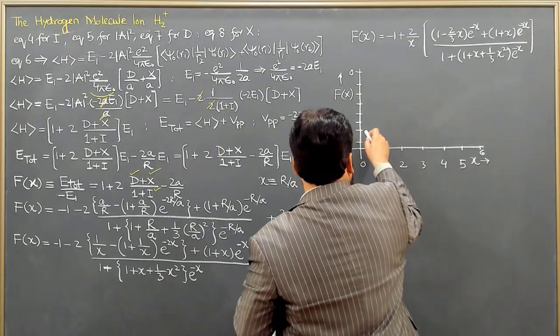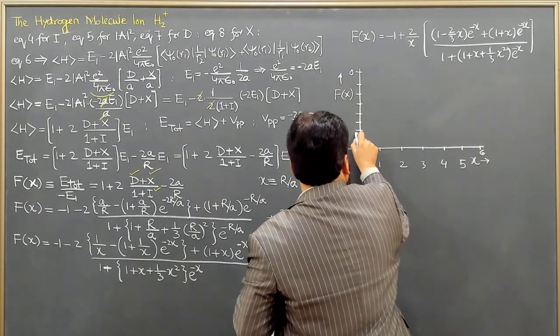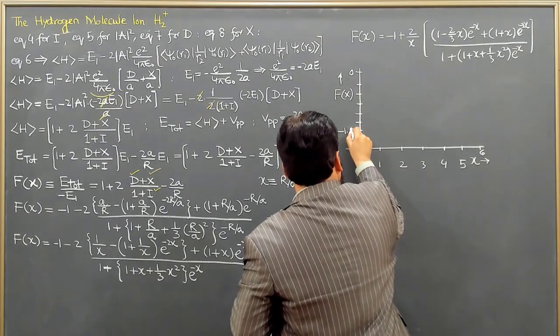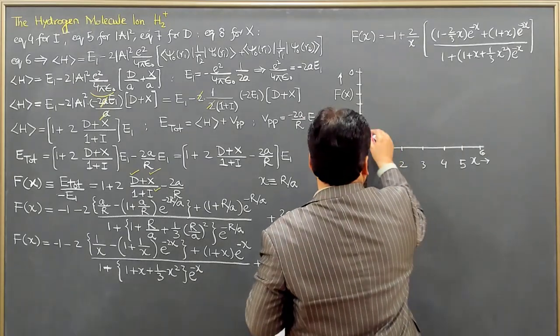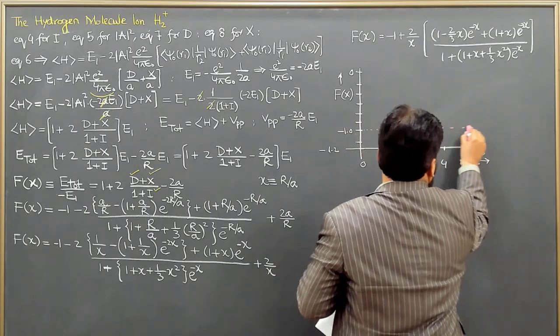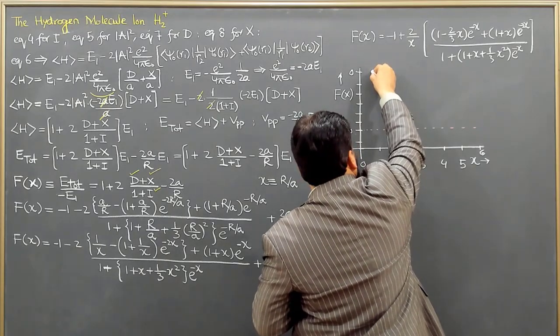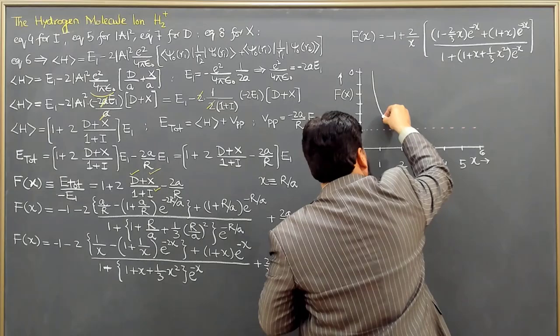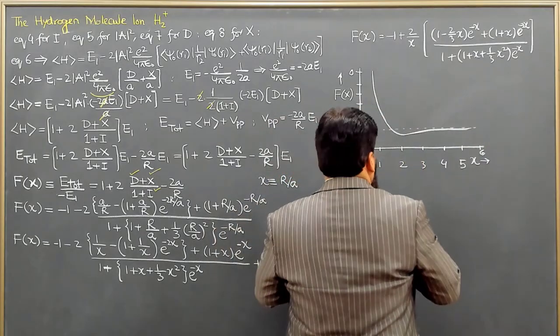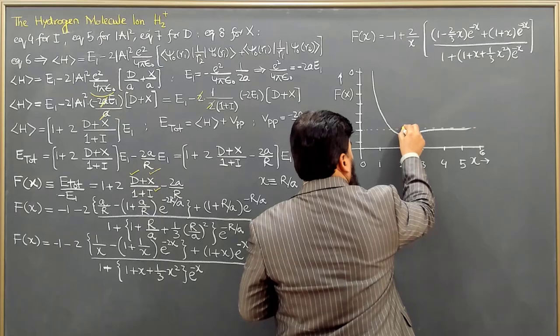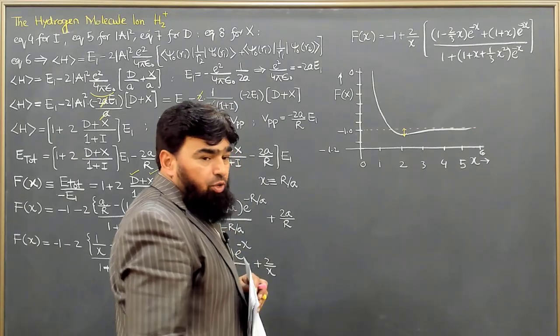So the plot is something like this. If this value is minus 1.0 here, then I extend this one. So we have something like this. The plot comes in here, comes in here, and then it slightly goes here and then goes like this. So this portion.